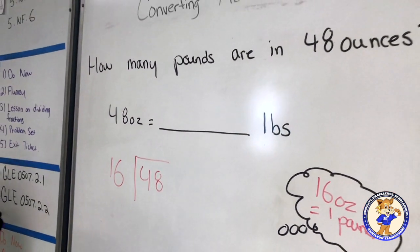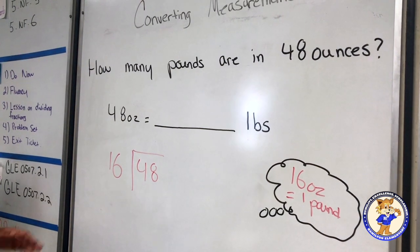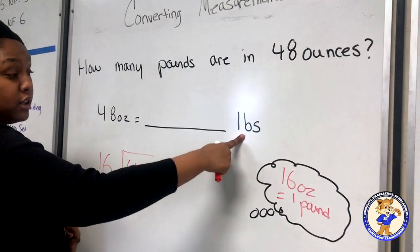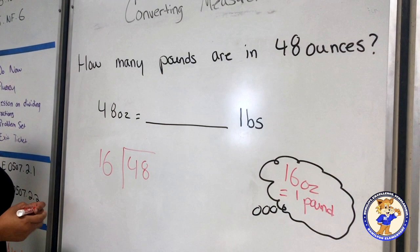Why? Because when you're converting from a smaller unit like ounces to a bigger unit like pounds, you have to divide.